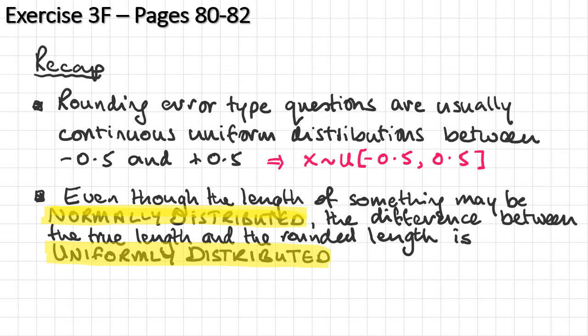So you should now be able to do exercise 3F on pages 80 to 82 and then the mixed exercise at the end of the chapter. Just a quick recap here. We've done a couple of rounding error type questions. And these are usually a continuous uniform distribution between negative 0.5 and plus 0.5. That's if it's been rounded to the nearest unit, nearest whole number. And be careful because even though the length of something, let's say pencils, may be normally distributed, the difference between the true length and the rounded length is uniformly distributed.